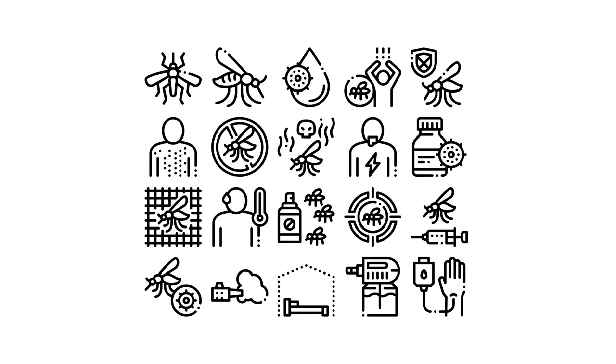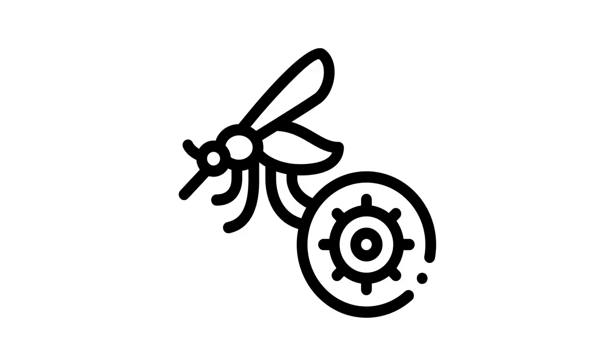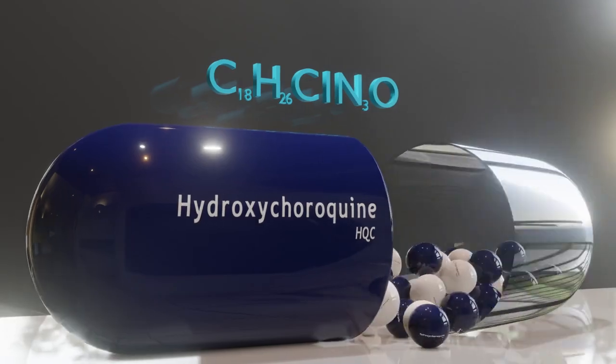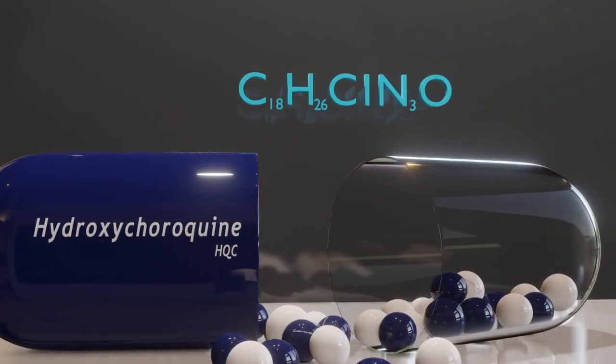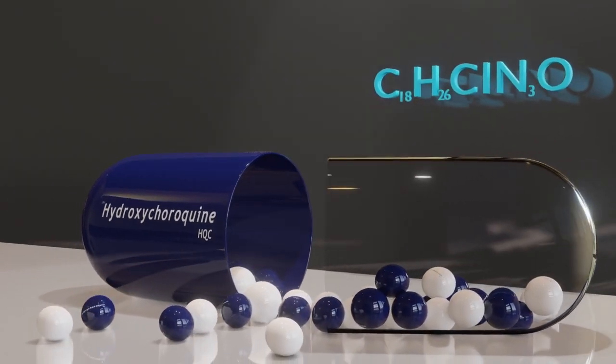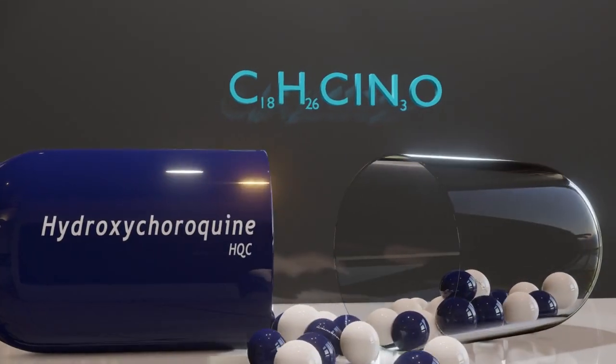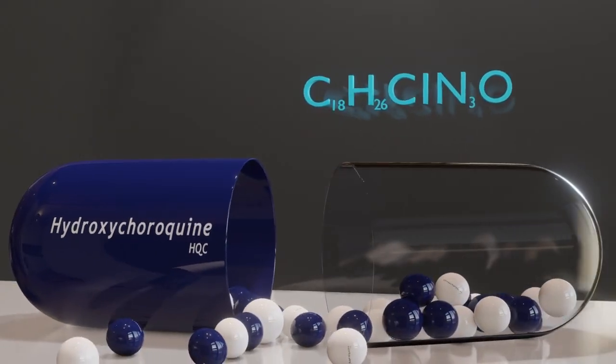Number 10. What is the treatment for malaria? The treatment for malaria depends on the plasmodium species and the severity of the disease. For uncomplicated malaria, artemisinin-based combination therapies (ACTs) are commonly used, especially for Plasmodium falciparum infections. Chloroquine is used for Plasmodium vivax in regions without resistance, while primaquine is given to eliminate dormant liver stages and prevent relapses. Severe cases may require intravenous treatments and hospitalization for close monitoring.